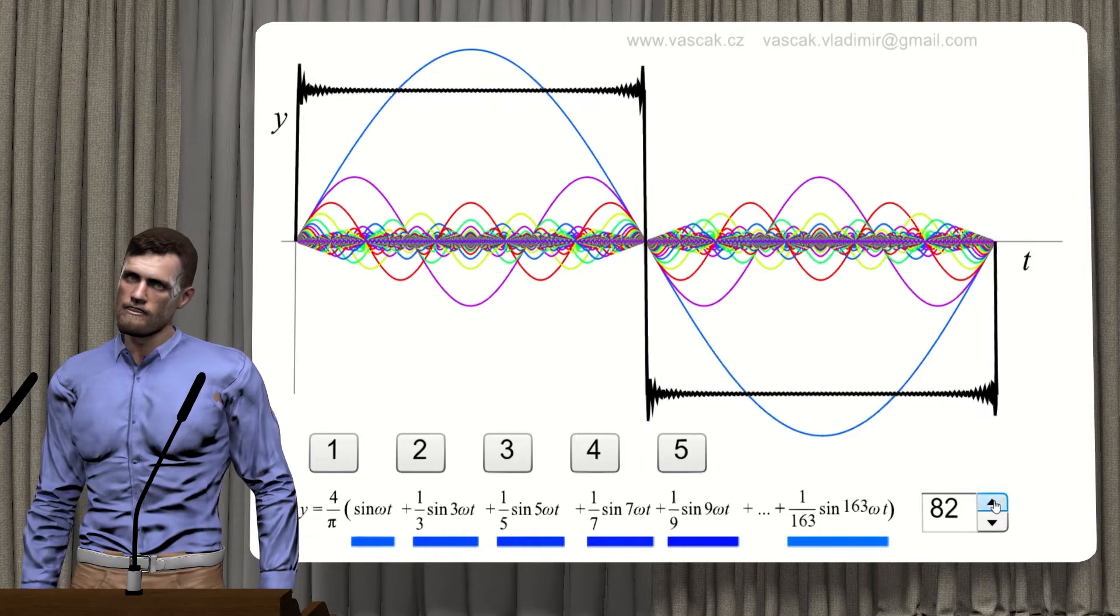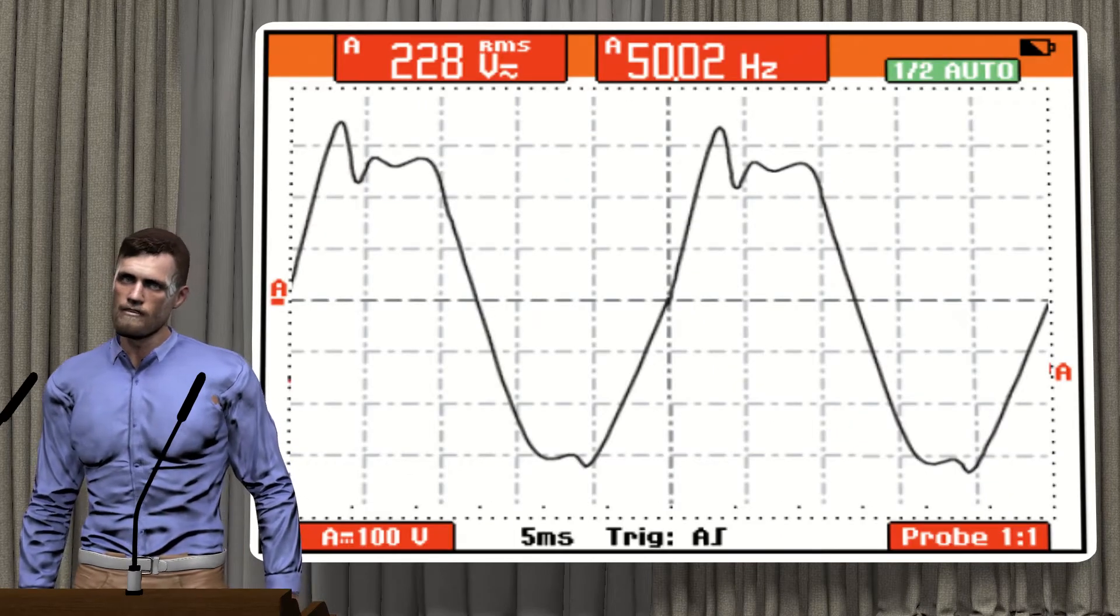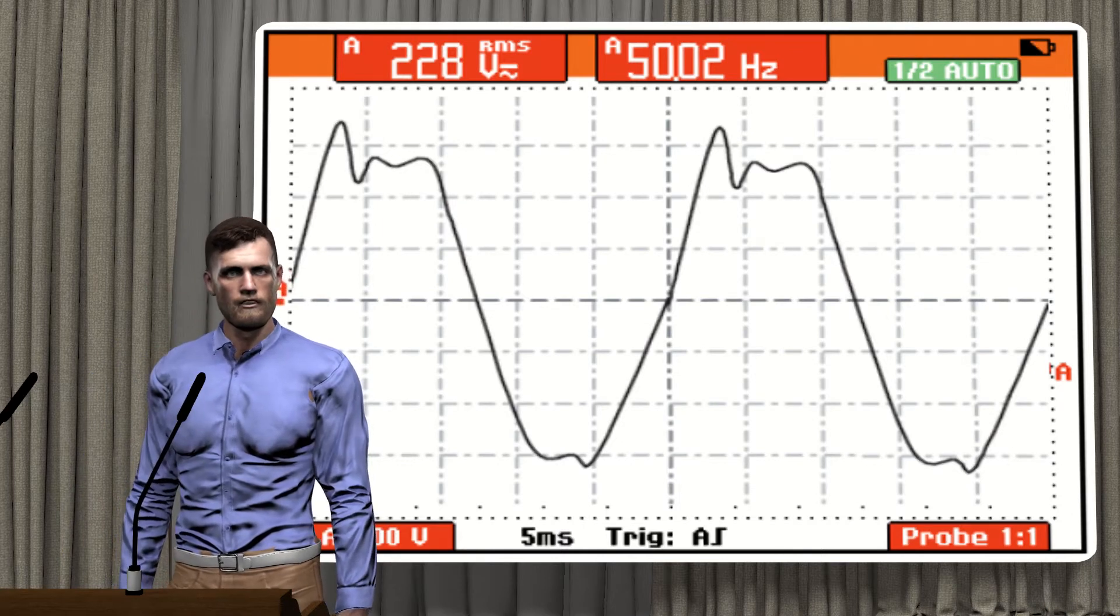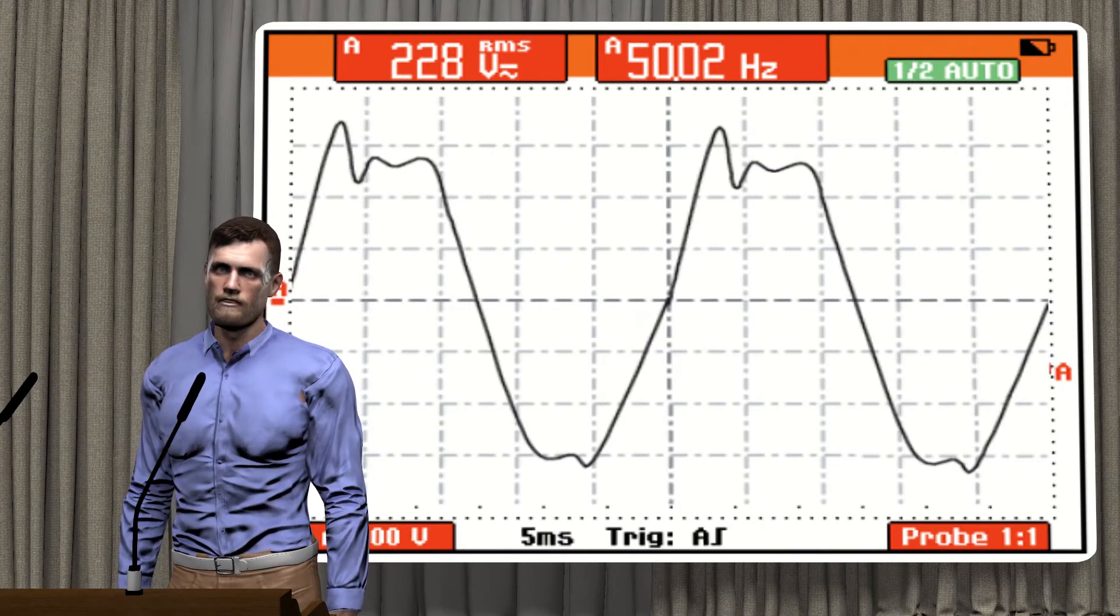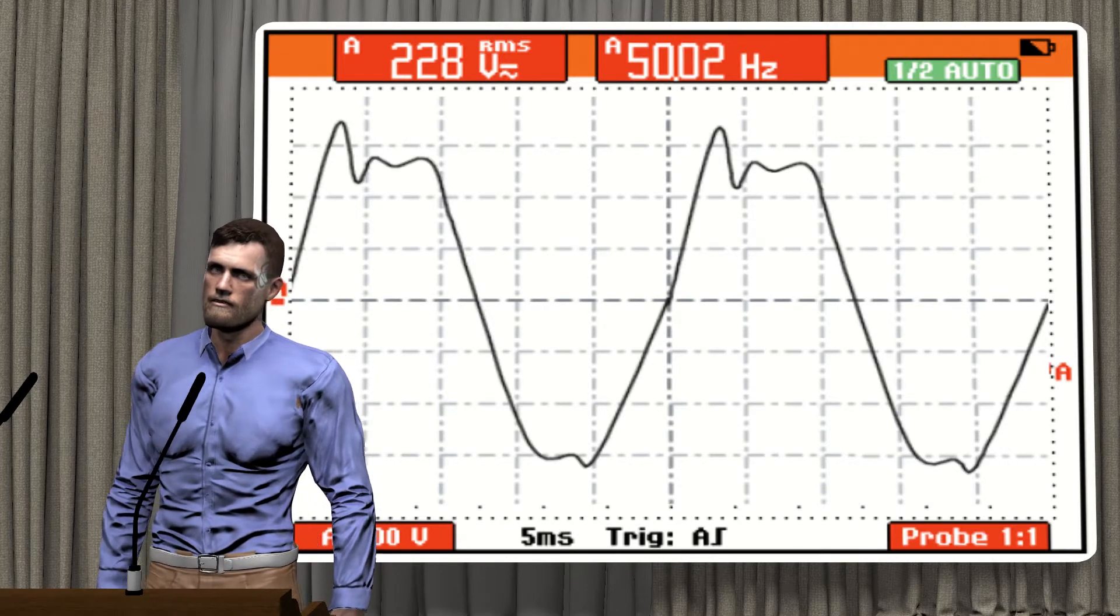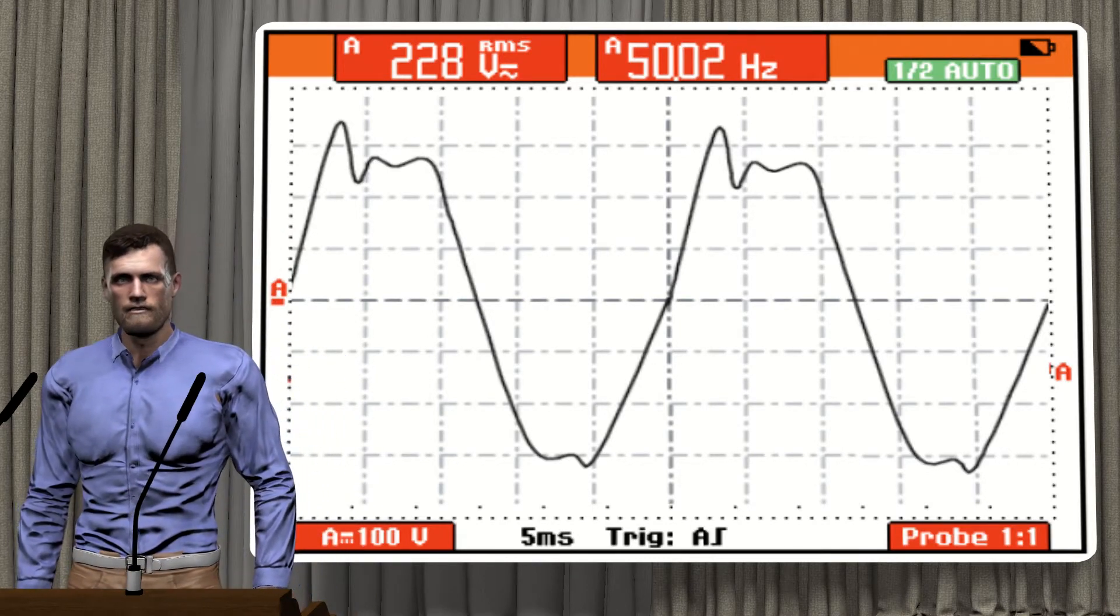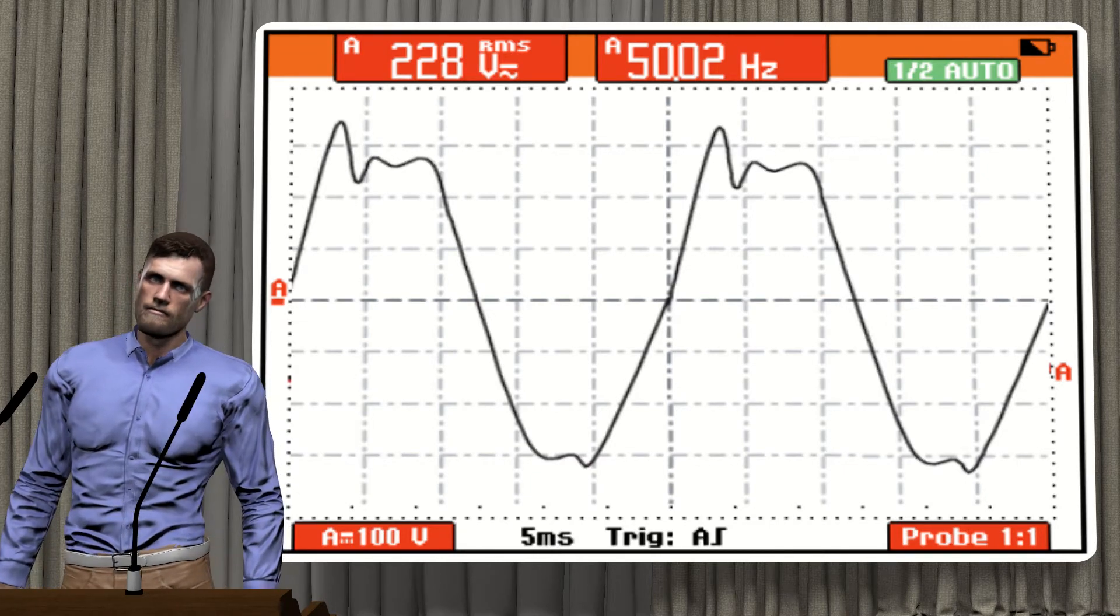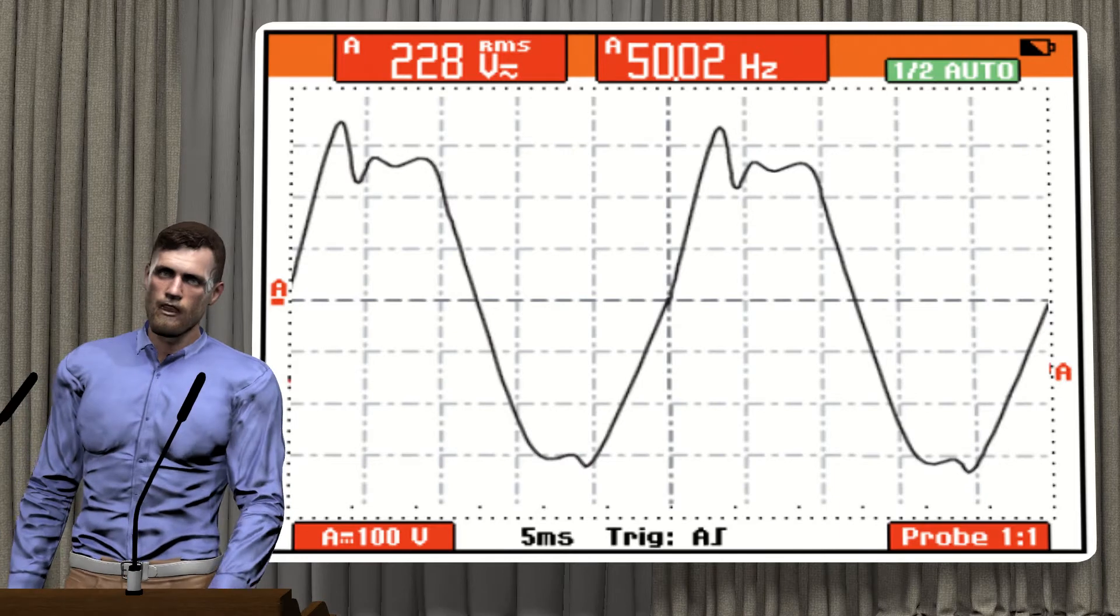In the case of electrical networks, the fundamental component will have a frequency of 50 or 60 Hz, depending on the country. For simplicity, throughout the rest of the video we will consider a 50 Hz network. In this case, the fundamental component will be 50 Hz, then the second order harmonic will have 100 Hz, the third order harmonic will have 150 Hz, and so on.